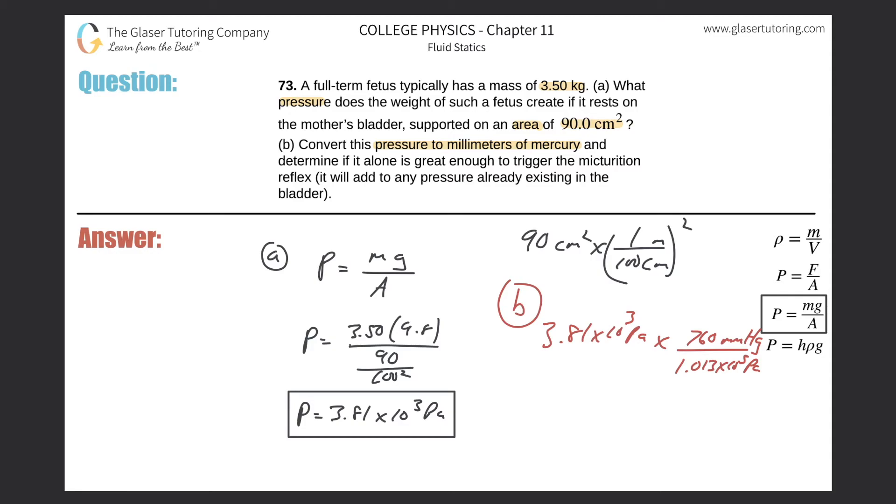That value multiplied by 760, divided by 1.013 times 10 to the fifth. And we get a value of approximately—the Pascals cancel out—the millimeters of mercury will be about 28.6 millimeters of mercury.